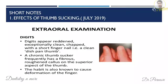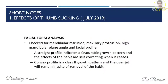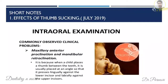Short note: effects of thumb sucking. Effects can be written under extraoral and intraoral examination. In extraoral examination: the digits show clean nails with roughened calluses. The lip is short, hypotonic, with a hyperactive lower lip and incompetency. The facial form shows mandibular retrognathism, maxillary protrusion, and a convex profile. On intraoral examination, maxillary anterior teeth are proclined and mandibular teeth are retroclined due to thumb pressure.